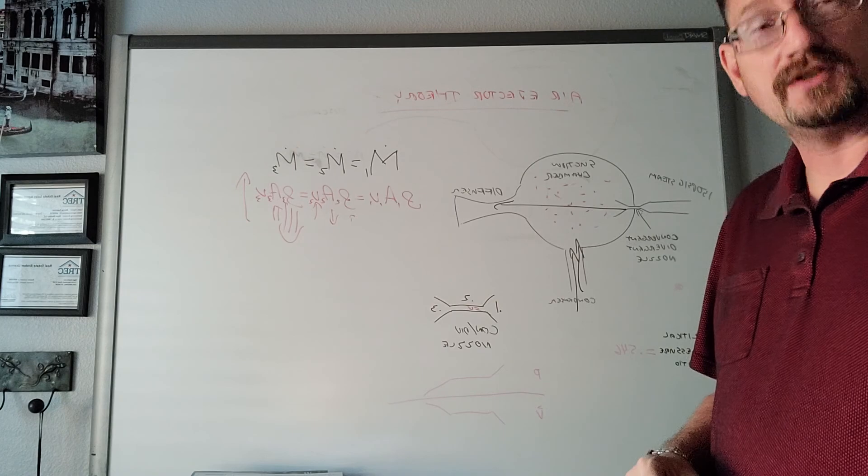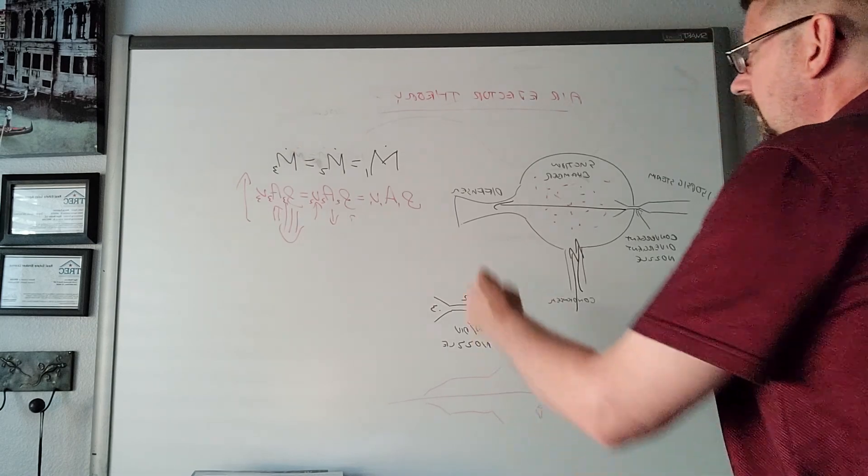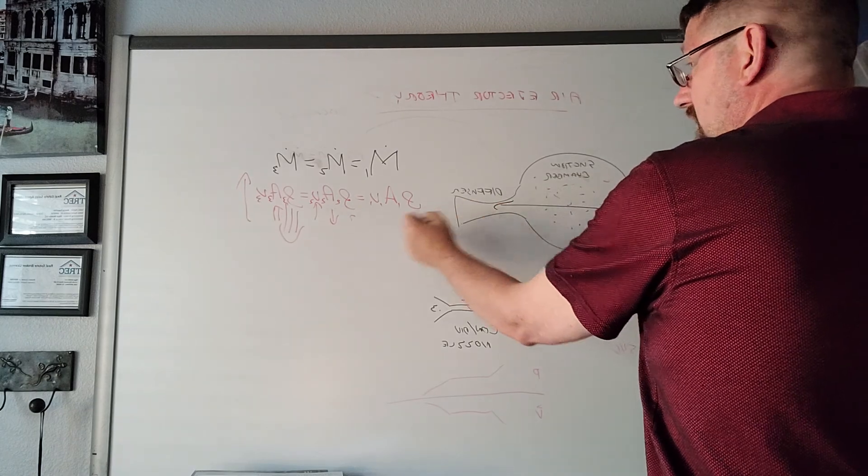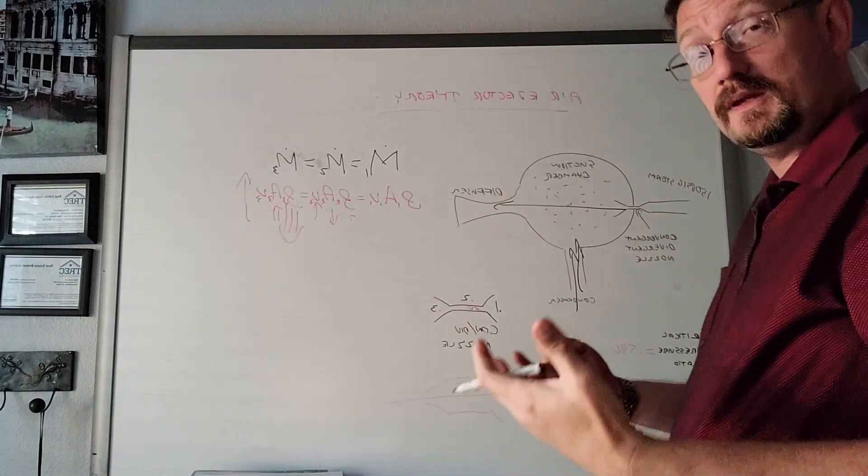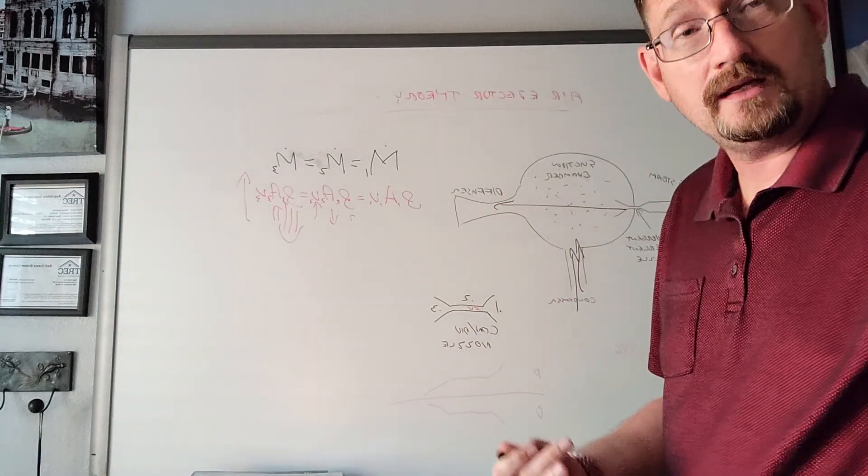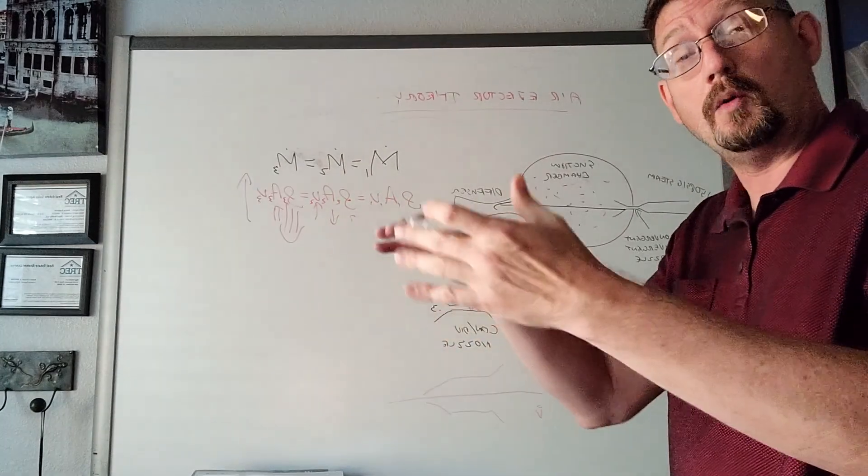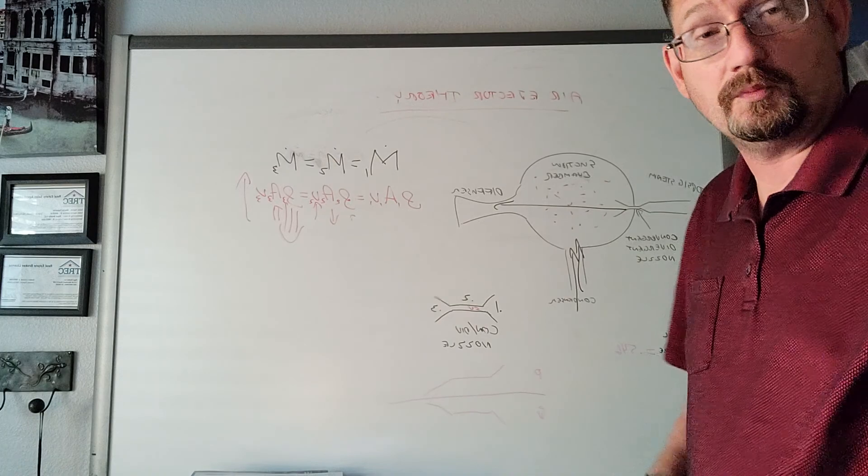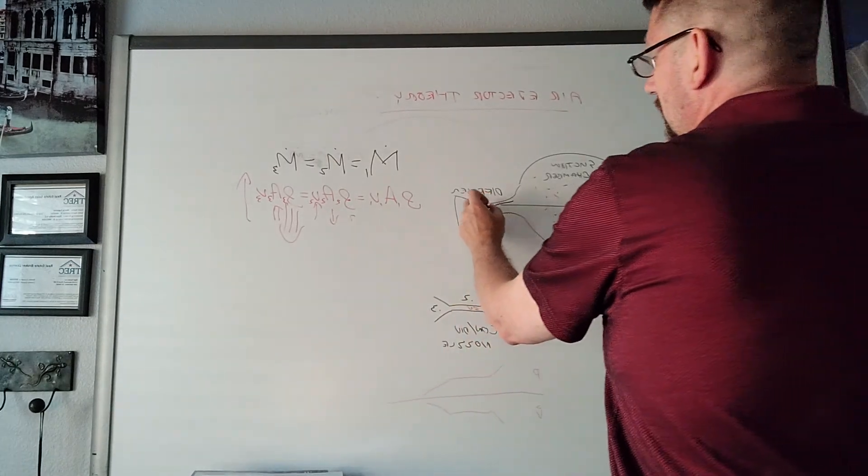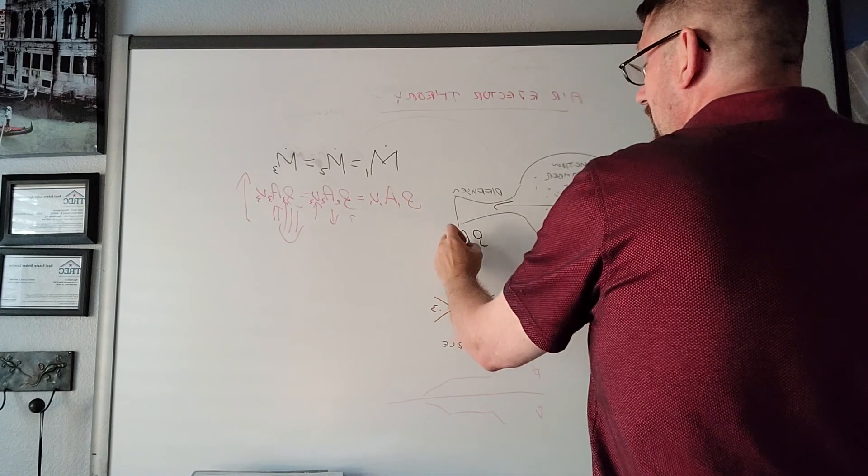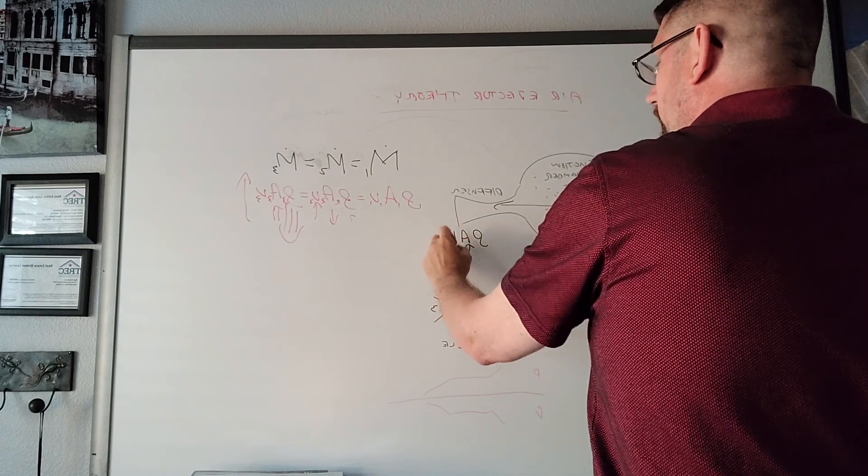In the diffuser, once it's molecularly entrained the air and non-condensable gas, it slows down a little bit. Those properties go back to where they were before they were supersonic. Area goes up, speed comes back down.